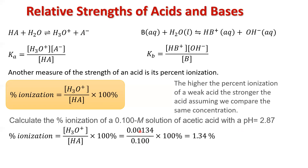If we take 10 to the negative 2.87, that gives us the hydronium ion concentration. Once we know the hydronium ion concentration and the concentration of the acid, we can find out how much of that acid ionized. The number is really small — the smaller this number, the weaker the acid. In many cases, this number will be less than 5%, and oftentimes even less than 1%. The smaller the percent ionization, the weaker the acid.